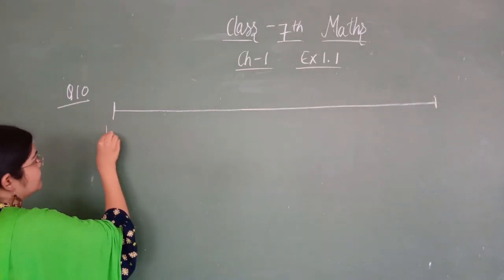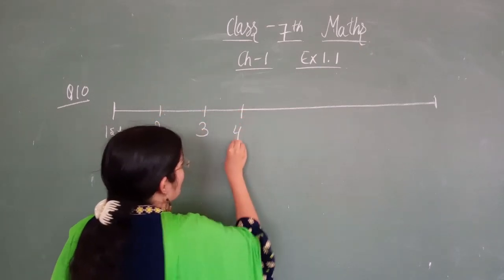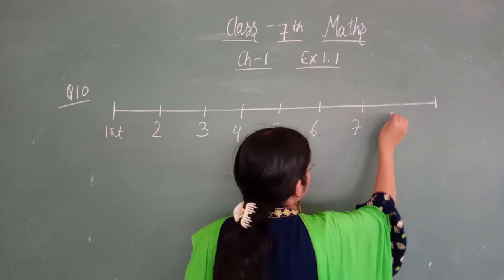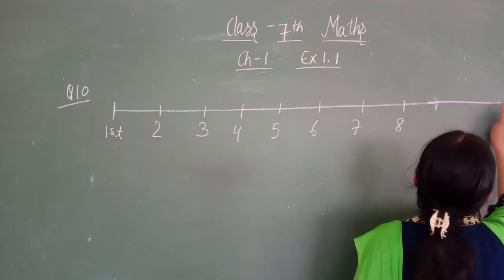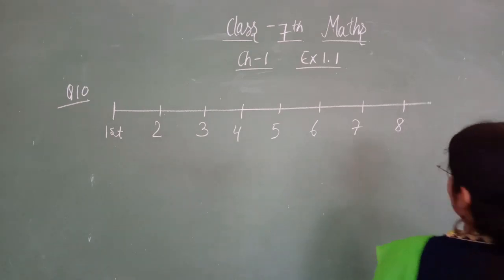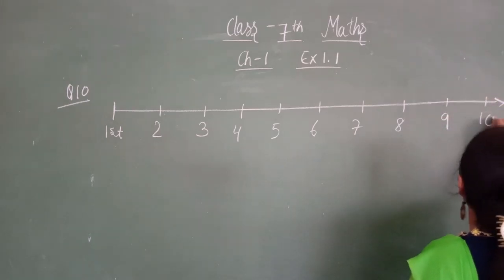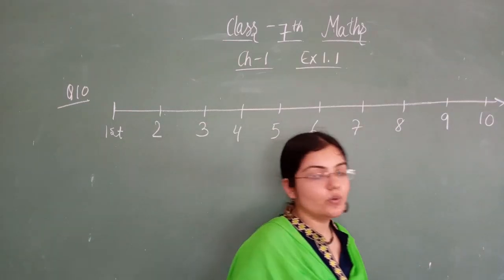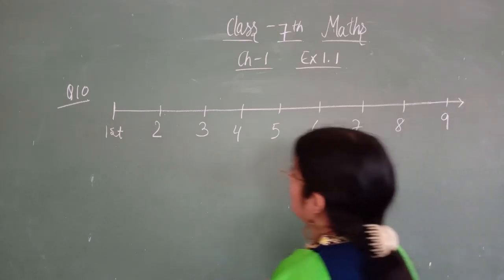Suppose this is the first step, this is the second, this is the third, this is the fourth, fifth, six, seven, eight, nine. So there are nine steps in total.